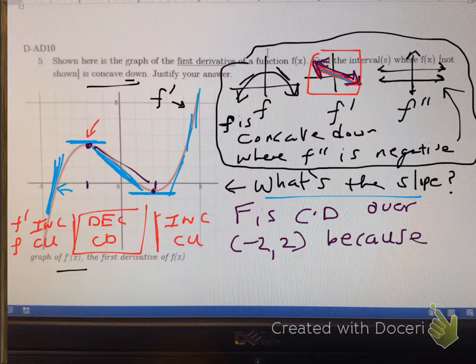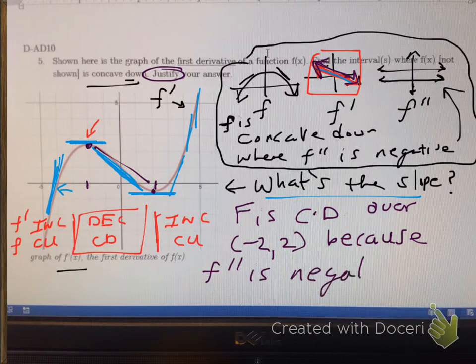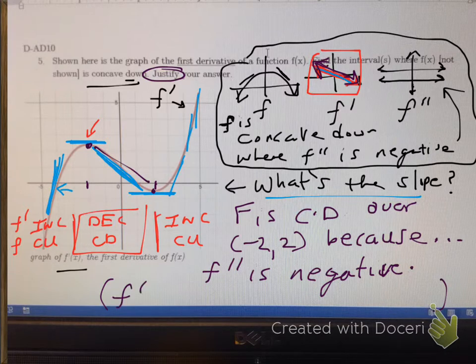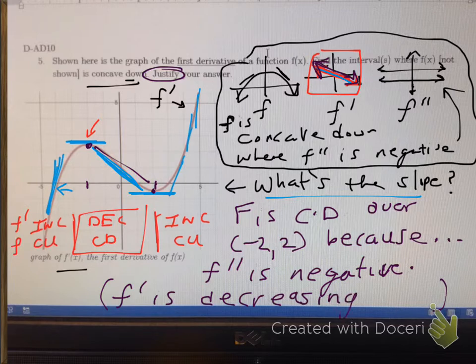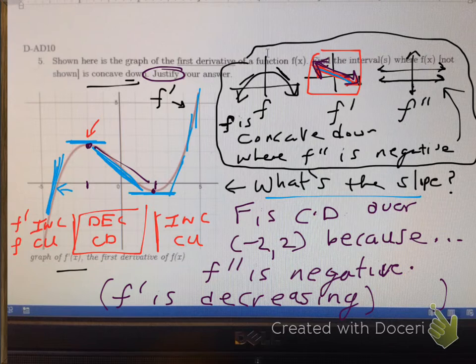Because. Justify. Because. F double prime is negative. You could also say. So, this would be redundant. But an alternative answer. After the word because. Because. F double prime is negative. Or. F prime is decreasing. Since we're given a graph of f prime. This may actually be a better approach. Because it deals with f prime. Which is what we're given.